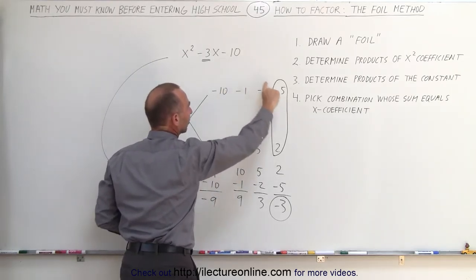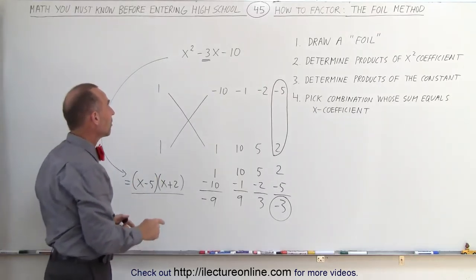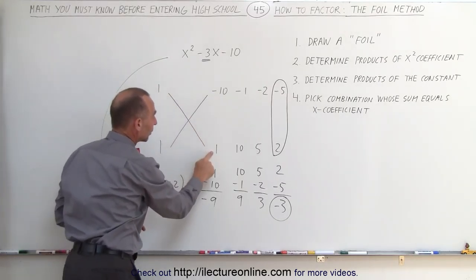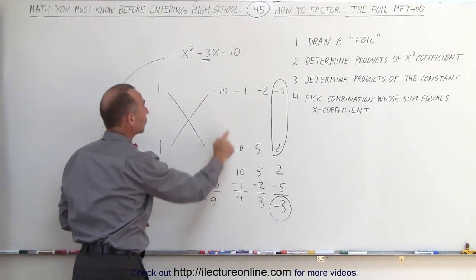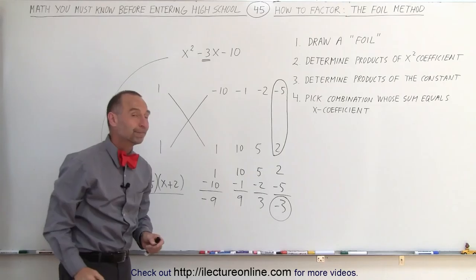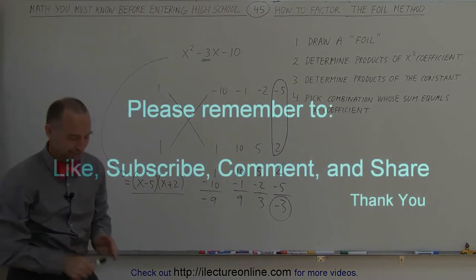In this case, there's four combinations. You check each combination by multiplying this number by the number down here and this number by the number up there. Add them together and see when you add them together and end up with the middle term over there. And that's how it's done. Thank you.